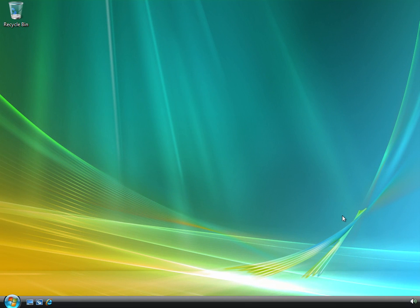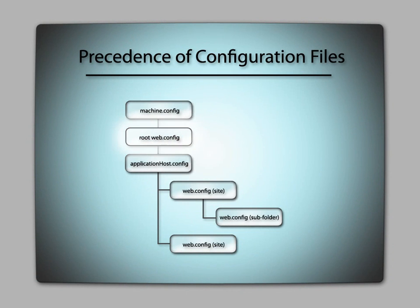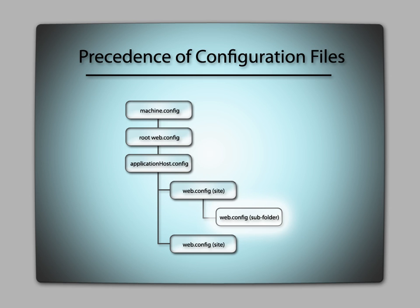In IIS 7, this enhanced ability to provide delegation stems from the sequence in which configuration files are parsed. First the machine.config and root web.config, and then the new applicationhost.config file. Pretty much any time we set up a server-wide setting, it ends up here in applicationhost.config. After the server-wide configuration is parsed, then we get down to the individual web.config files for each application. And delegation to subfolders can happen either by putting web.config files in those subfolders, or by using location elements in web.config files higher up in the chain.